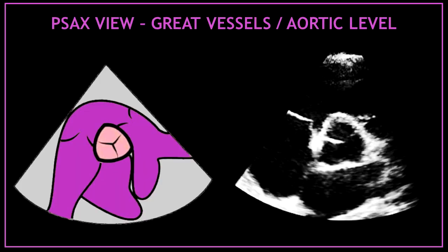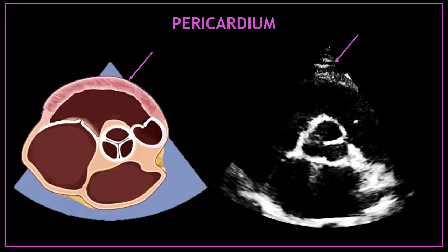We are going to focus only on this view, which is called the parasternal short axis view at the great vessels or aortic valve level. The first structure is the pericardium. The pericardium corresponds to that very anterior, thin, and bright line.